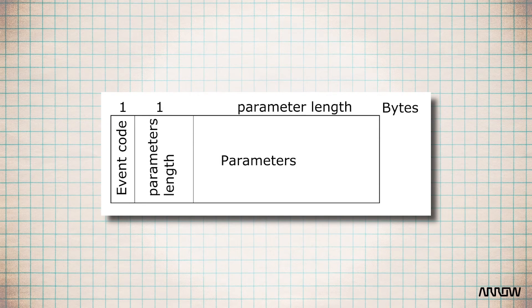Event packets, which are used to send information from the controller to the host, are typically in response to something that the host has previously commanded. The event packet has 1 byte for the event code, 1 byte for parameter length, and then all of the parameters.